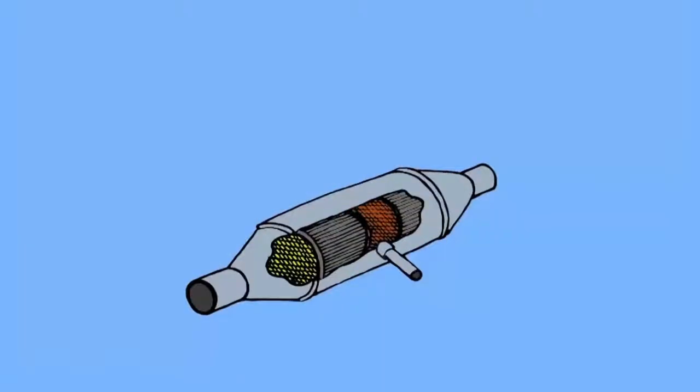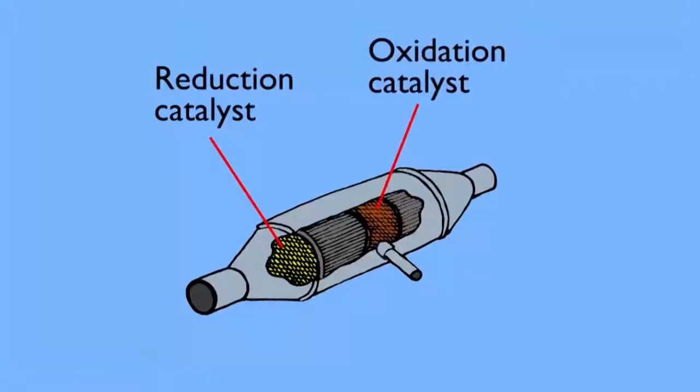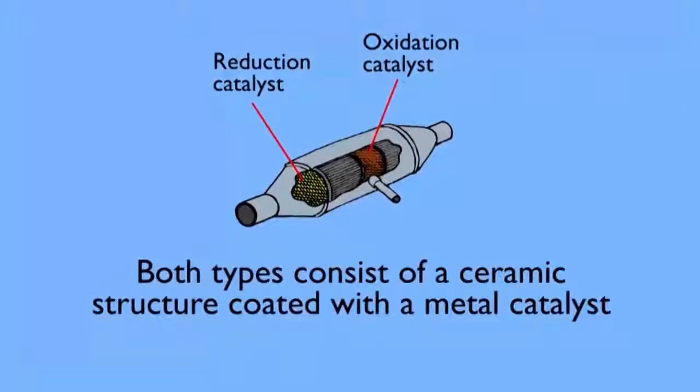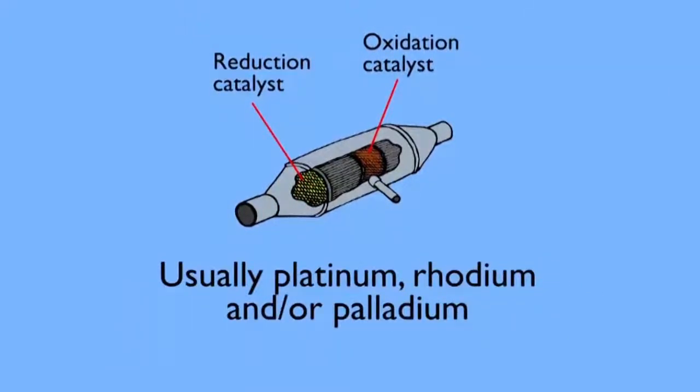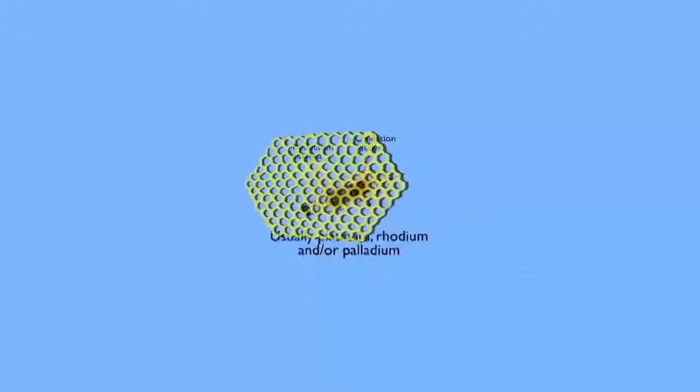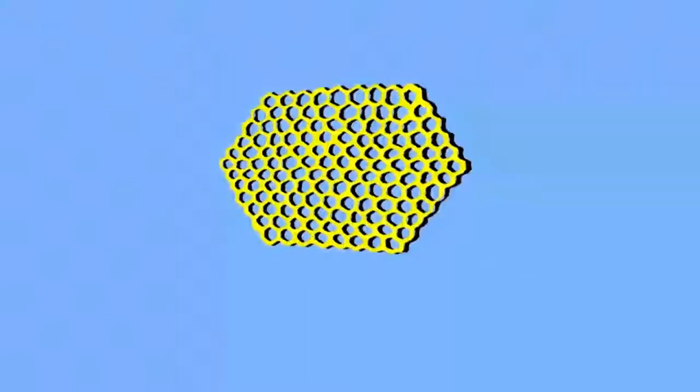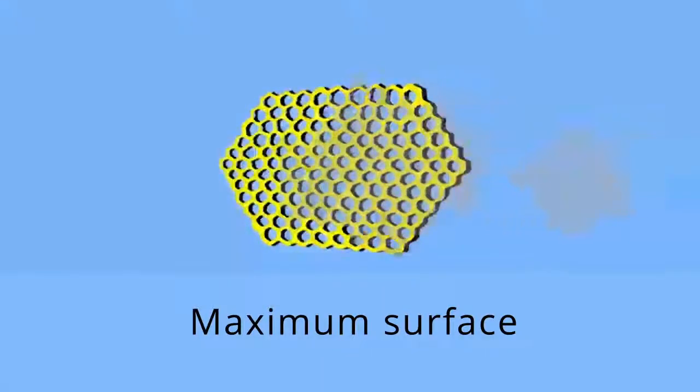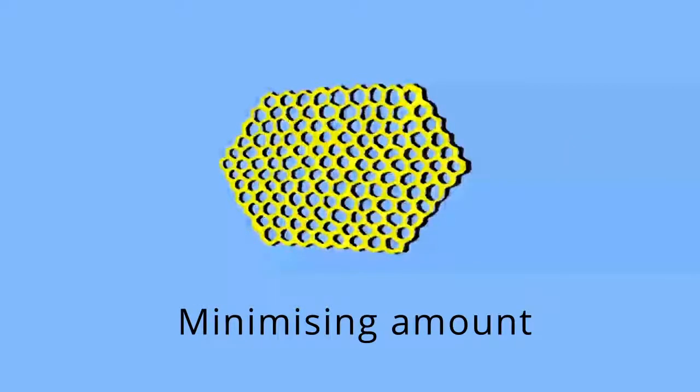A reduction catalyst and an oxidation catalyst both consist of a ceramic structure coated with a metal catalyst, usually platinum, rhodium, and/or palladium. These metals are usually formed in a honeycomb arrangement. The honeycomb structure exposes the maximum surface of catalyst to the exhaust stream while also minimizing the amount of catalyst required.